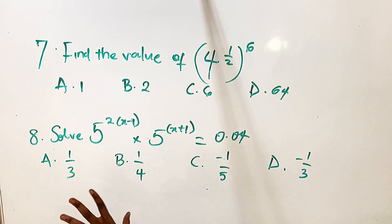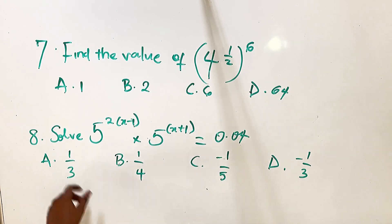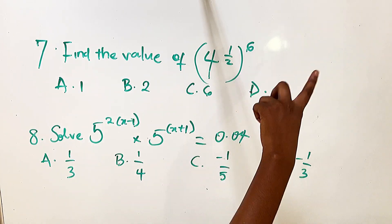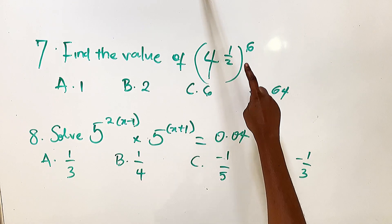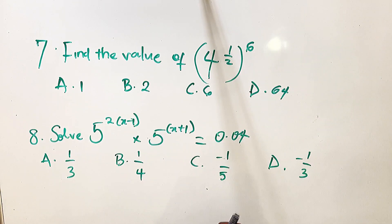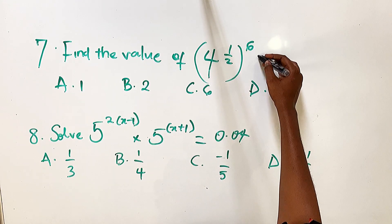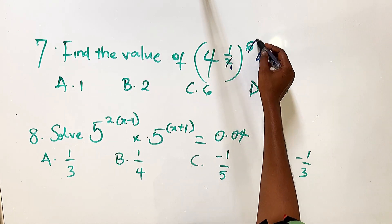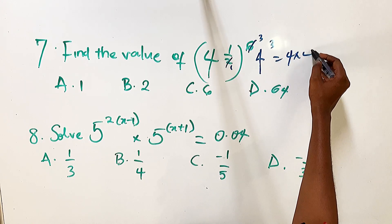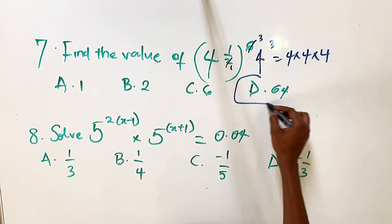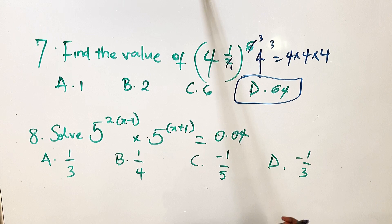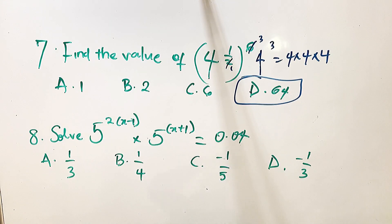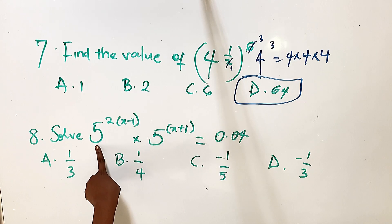There are two more questions. The first says: find the value of 4 raised to power one half, raised to power 6. When you have two powers like this, multiply them. One half times 6 equals 3, so this becomes 4 cubed. 4 times 4 times 4 is 64. The answer is D — that's a quick one.